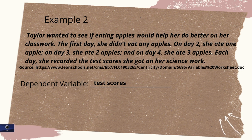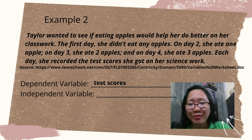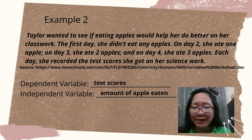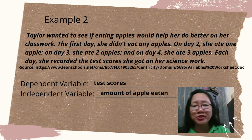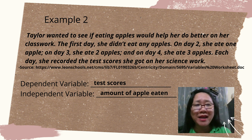If Taylor eats one apple, what is her score? How about if two apples are eaten — what is her score? So in short, if more apples are eaten, will she get better scores? So test score is our dependent variable. Now, what do you think is the independent variable? The independent variable is the amount or number of apples eaten, because the amount of apples is manipulated — one apple on the second day, two apples on the third day, and three apples on the fourth day. So apples are the cause of the increase or decrease of Taylor's test scores, hence apples are the independent variable.